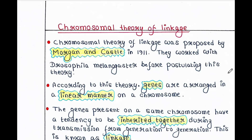Chromosomal Theory of Linkage was proposed by Morgan and Castle in 1911. They actually worked with Drosophila melanogaster, the fruit fly, before postulating this theory.